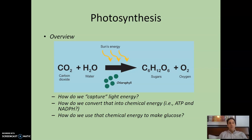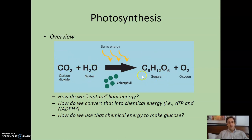Here's the overall equation for photosynthesis. It is the reverse of cellular respiration. Just like with cellular respiration, we're going to want to account for where is the CO2 used, where is the water used, where is the sugar produced, and where is the oxygen produced.